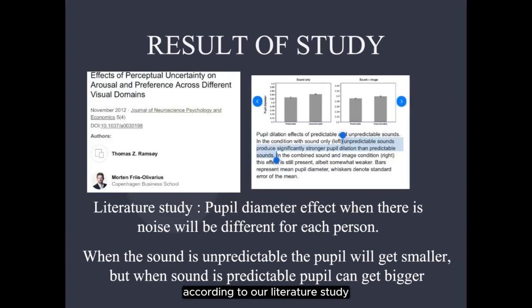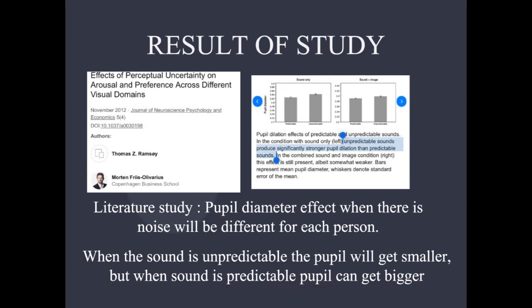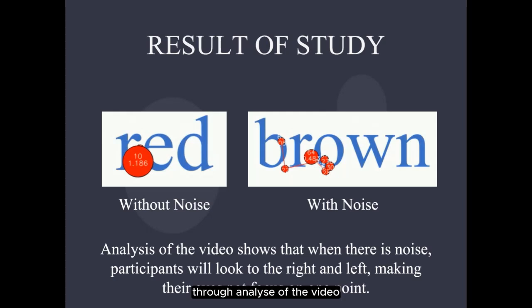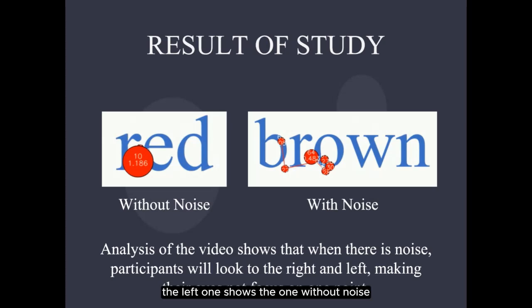According to our literature study, the pupil diameter effect when there's noise will be different for each person. When sound is unpredictable, the pupil will get smaller, but when sound is predictable, the pupil can get bigger. We believe that's one reason why our pupil diameter result isn't significant — all girl participants are from our team and had listened to the noise before doing the task. Analysis of the video shows that when there's noise, participants look to the right and left, making their eyes less focused. The left image shows the condition without noise and the right shows the one with noise.